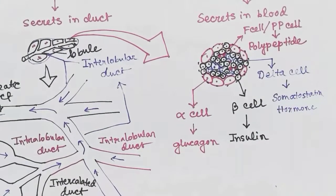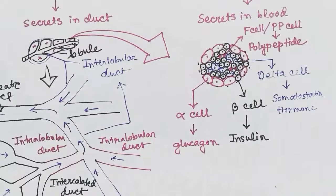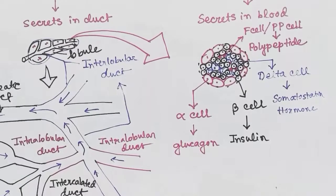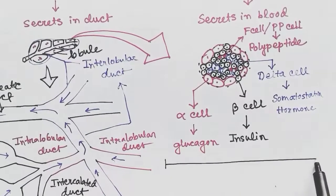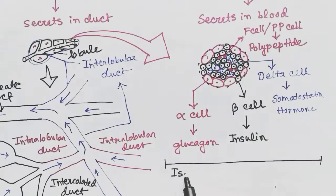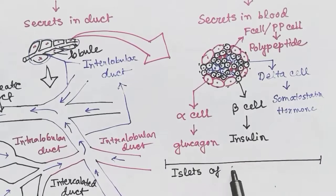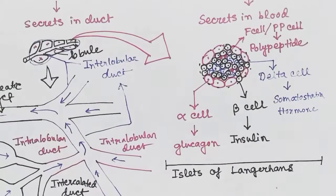These islets are called the islets of Langerhans. The endocrine part constitutes only 2 percent of the pancreas.